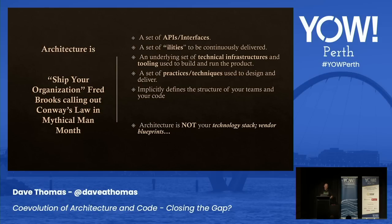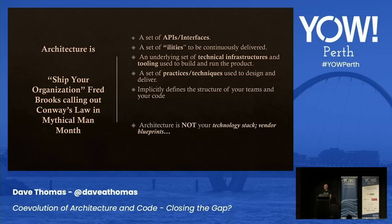For me, an architecture is really just a set of APIs — hopefully not too many. When someone says they have a REST architecture, that means they have thousands of APIs to me. What I expect is a few APIs that are fairly general purpose. And there's a set of ilities — non-functional properties like usability and reliability — that the architecture should continuously deliver, and you should have tests for those running all the time.